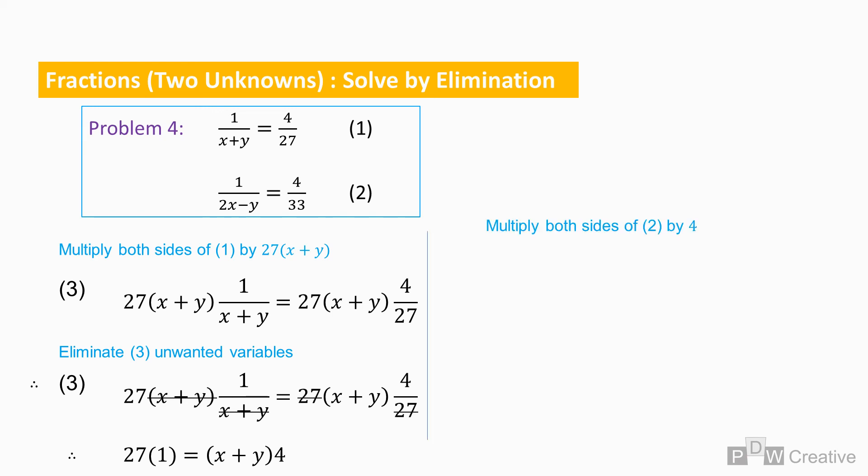Now let's perform the same action for equation two. This time we multiply by four, and again we eliminate, which gives us a second simplified equation. So now we have equations three and four to work to a solution in the same way as in previous examples.